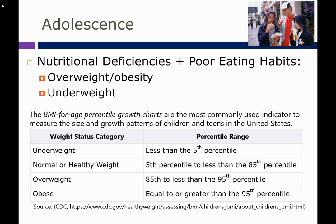In adolescence, similar to in childhood after age two, we use BMI for age percentile from 2 to 19 years of age, after which we can use the standard adult BMI categories. Please be familiar with the BMI for age categories: underweight is less than the 5th percentile, normal or healthy weight is the 5th to less than the 85th percentile, overweight is the 85th to less than the 95th percentile, and obese is equal to or greater than the 95th percentile.